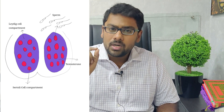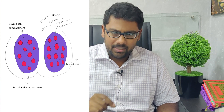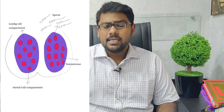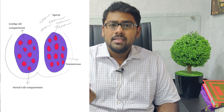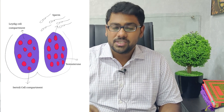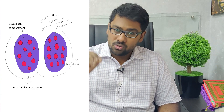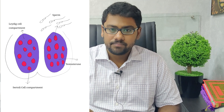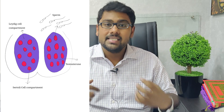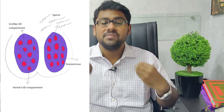The testis has two important functions. The Leydig cell compartment is important for the production of the male sex hormone Testosterone, and the Sertoli cell compartment is where sperm production takes place. Testosterone also plays an important role in sperm production. The testis size is ultimately determined by the number of cells in both the Sertoli and Leydig cell compartments.